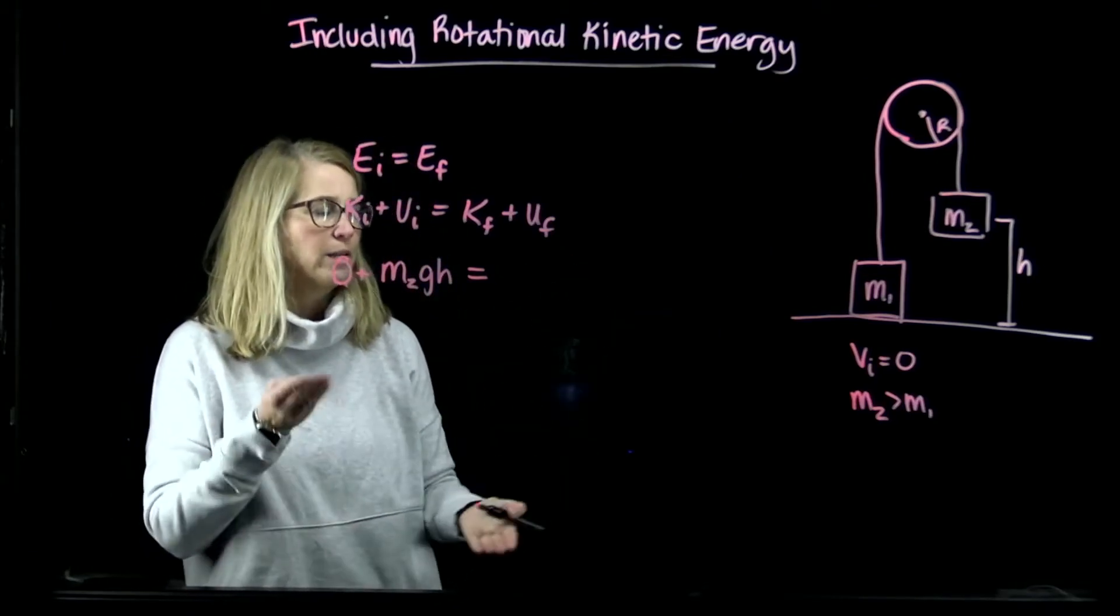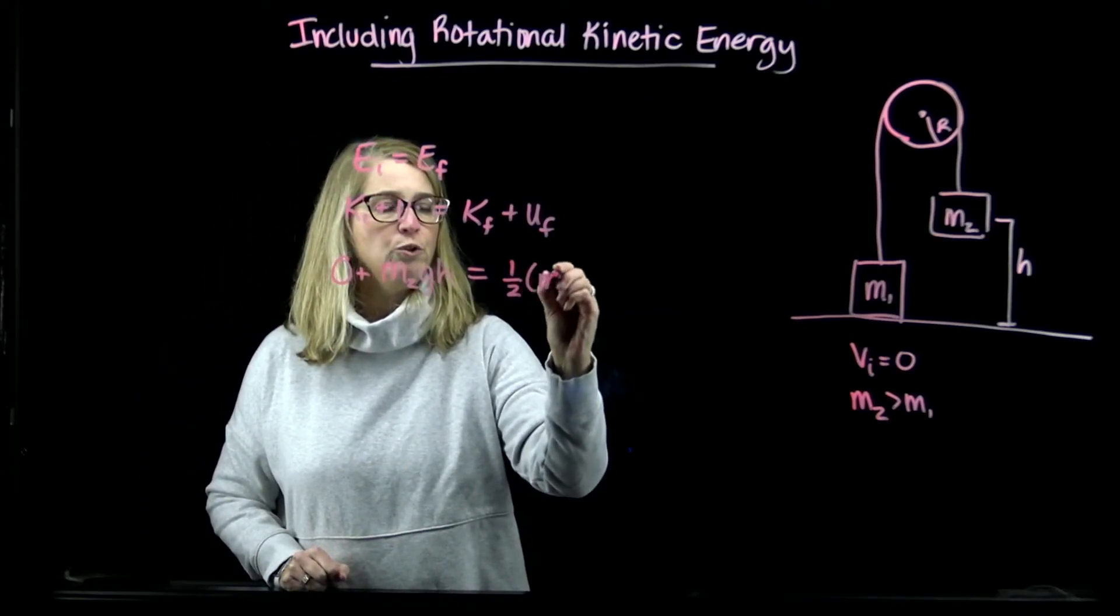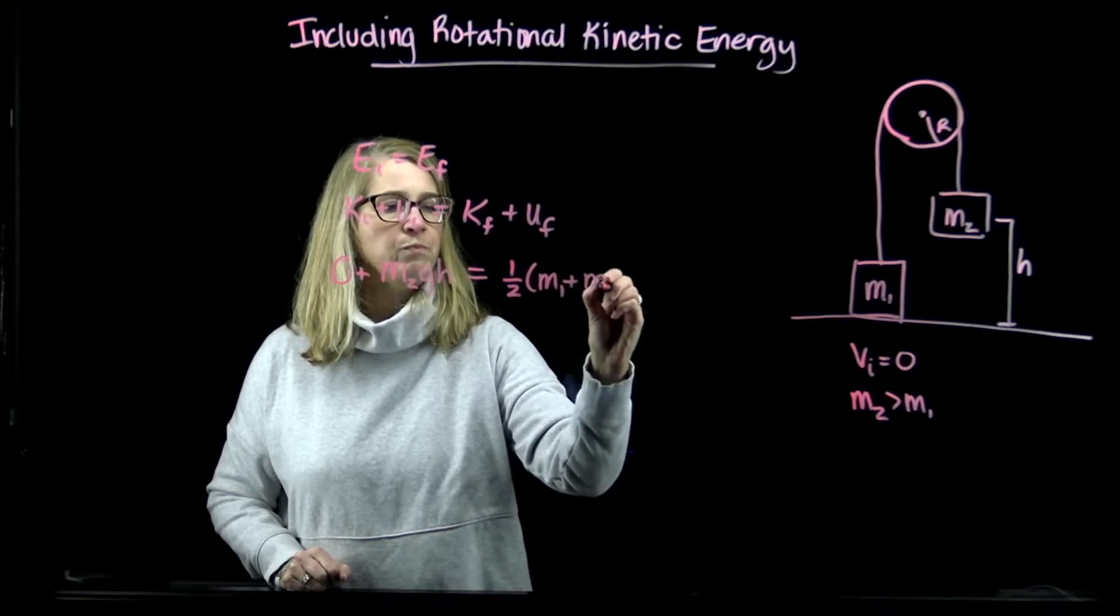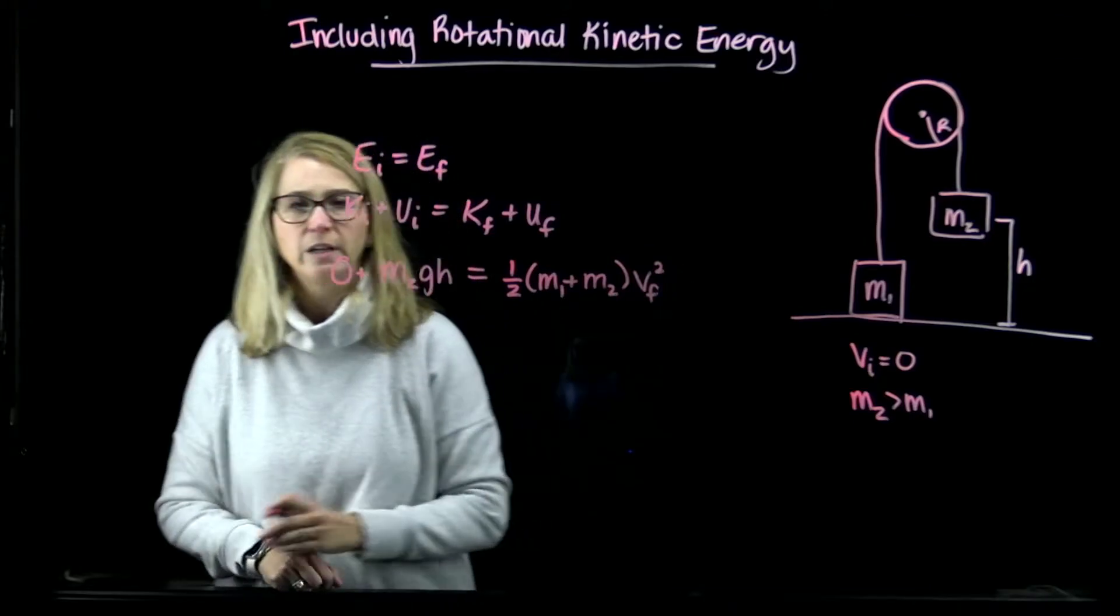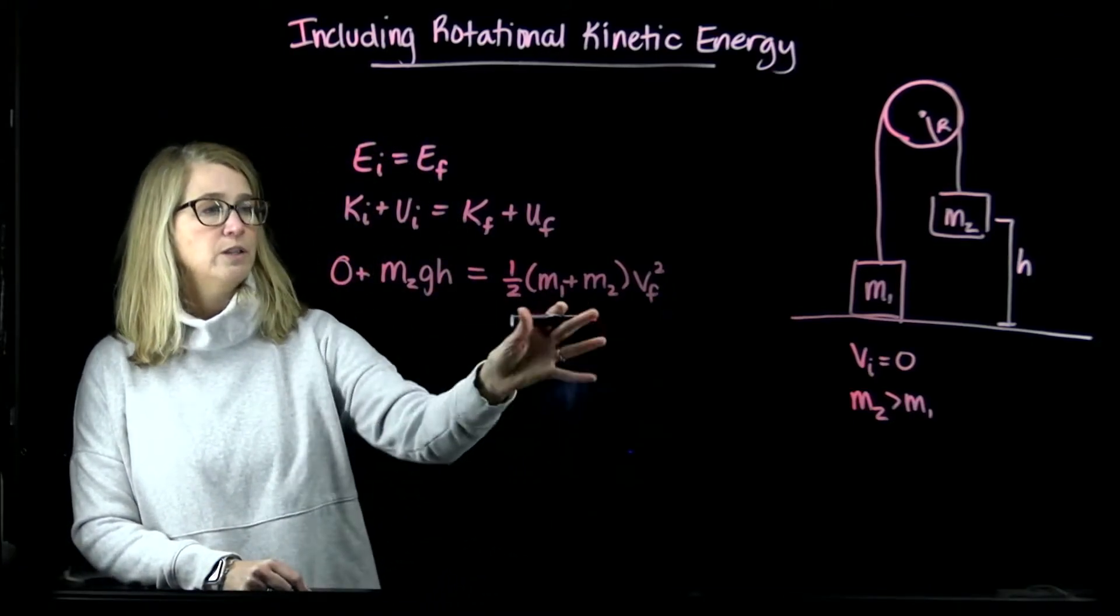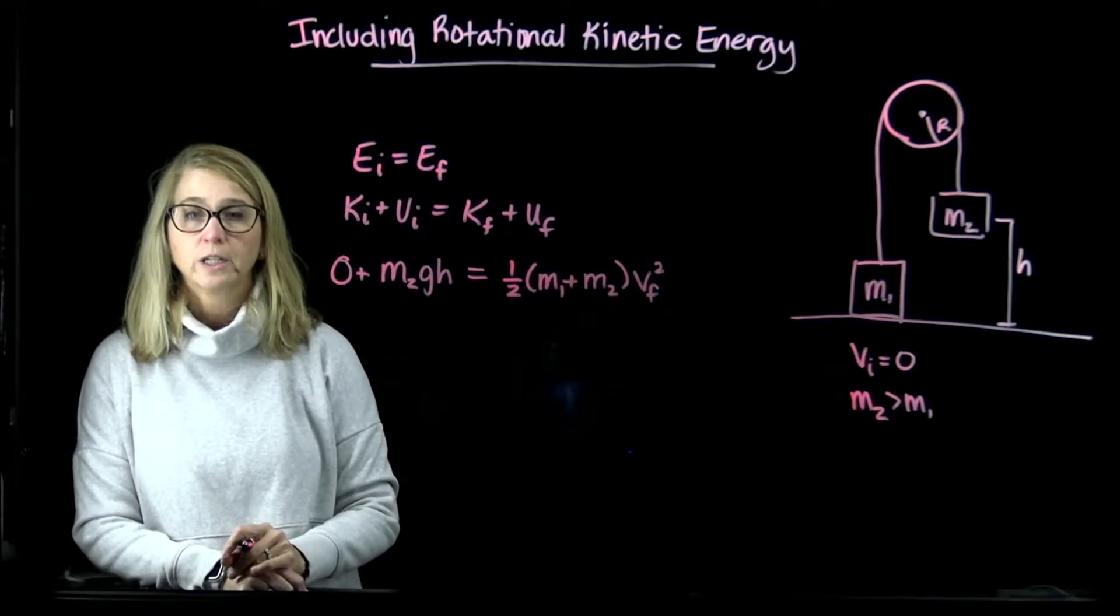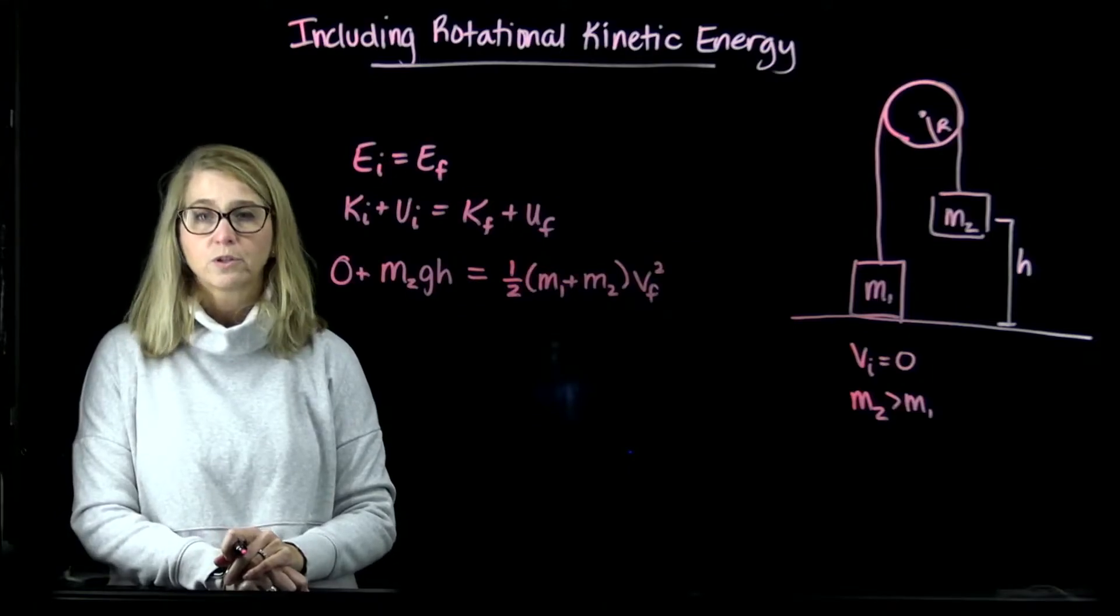After the pulley, after the mass falls and right before it hits the ground, the kinetic energy is going to be due to both of the masses moving. We can put them together because they have to have the same velocity because they're attached, so we could write the translational kinetic energy as 1/2(m1+m2)v².